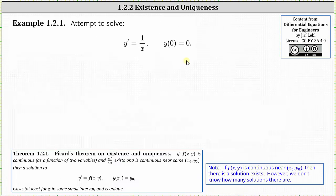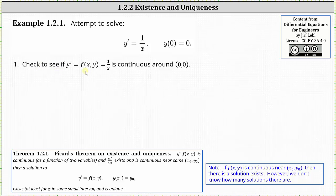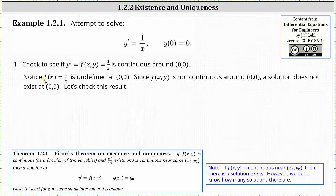Let's look at some examples. First, let's apply Picard's theorem to y prime equals one divided by x with the initial condition y of zero equals zero, to see if there is a solution and if so, whether it is unique. The first step is to check if f of x comma y, which in this case is one divided by x, is continuous around the point zero comma zero. It's easy to see that f of x equals one divided by x is undefined at zero comma zero because when x is zero we have division by zero. Since f of x comma y is not continuous around zero comma zero, a solution does not exist.